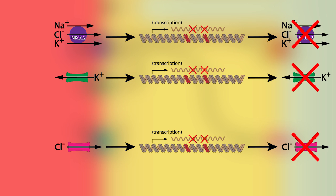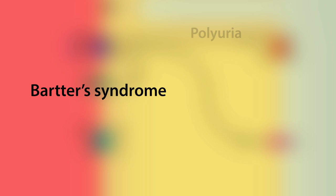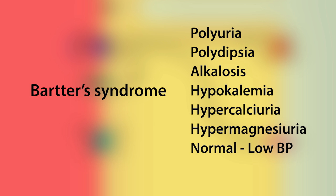Mutations in the NKCC2 cotransporter and potassium ion channel result in neonatal Barter syndrome, while mutations in the chloride ion channel result in classical Barter syndrome. Barter syndrome is characterized by polyuria, polydipsia, alkalosis, hypokalemia, hypercalciuria, hypermagnesuria, and normal to low blood pressure.